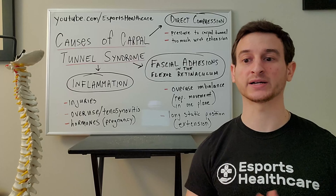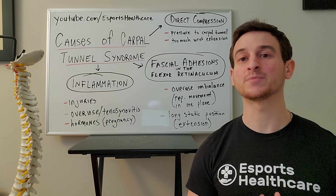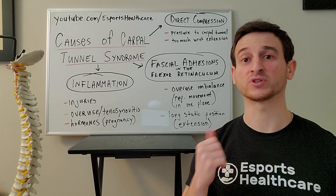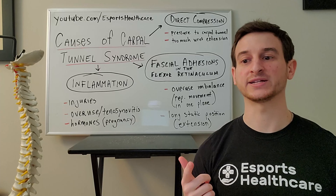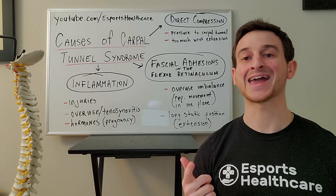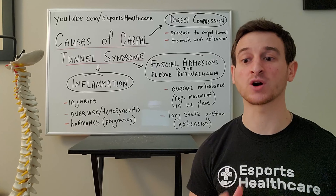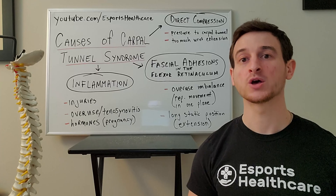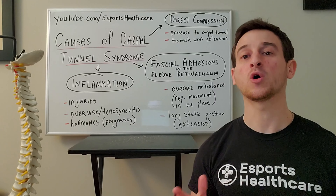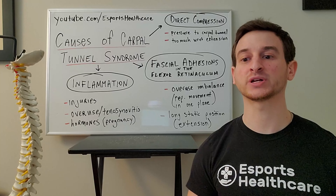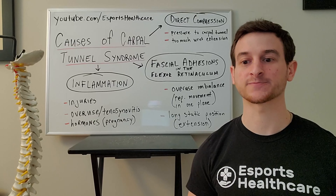To summarize, carpal tunnel syndrome can be caused by inflammation, fascial adhesions, and direct compression of the carpal tunnel through either poor hand and wrist position, injuries, or overuse imbalances.